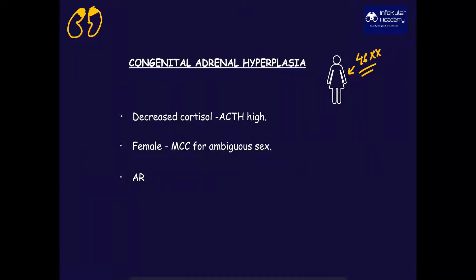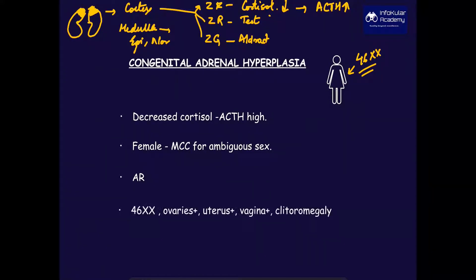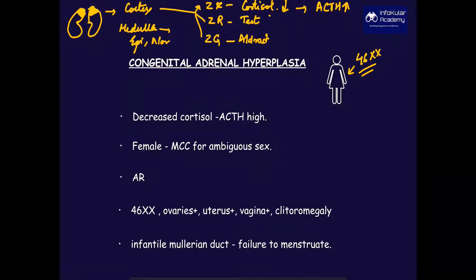Let us understand the mechanism. The bilateral kidneys have suprarenal glands on top. They have a cortex and a medulla. The medulla secretes epinephrine or norepinephrine, whereas the cortex is divided into zona fasciculata, zona reticularis, and zona glomerulosa. The zona glomerulosa secretes aldosterone, the zona reticularis secretes testosterone, and zona fasciculata secretes cortisol. This cortisol is decreased, which in turn enhances ACTH level. It is an autosomal recessive disorder.